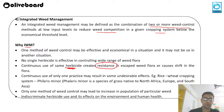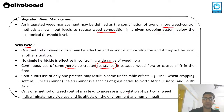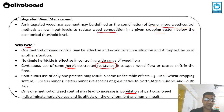Continuous use of the same herbicide may create resistance in the plant. Continuous use of only one practice may result in undesirable effects, so practices should be rotated. For example, in a rice and wheat cropping system, Phalaris minor — a grass native to North Africa, Europe, and South Africa — grows between crops, and using only a single weed control method may increase the population of that particular weed.